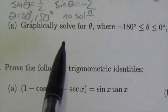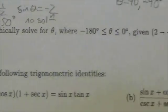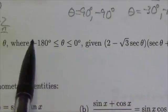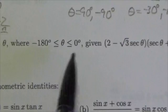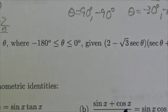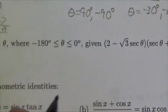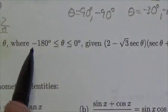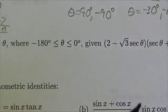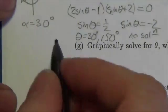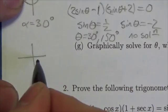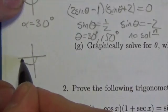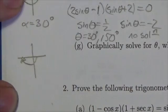We are going to graphically solve for theta in the interval from negative 180 to 0. So really what we're doing here is we are just following a negative half rotation. That's it.